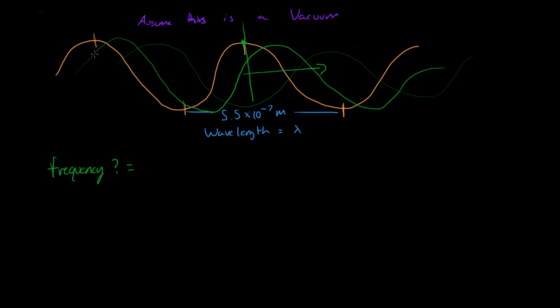Well, to find that we need to find out how fast is the light moving. We know the speed of light in a vacuum is equal to 3 times 10 to the 8th meters per second.